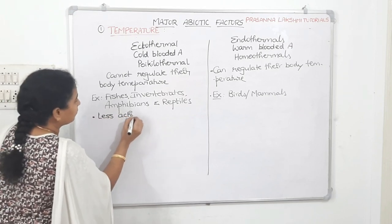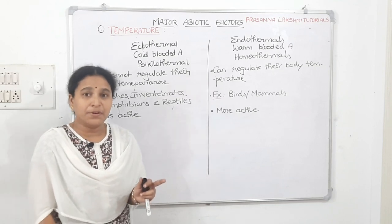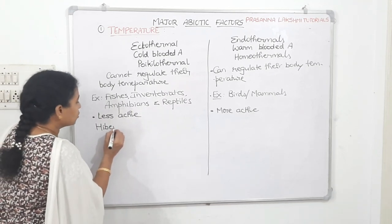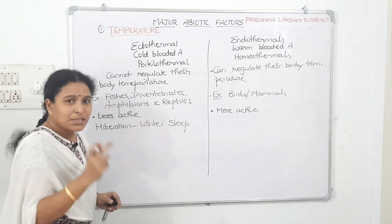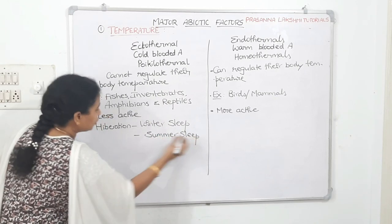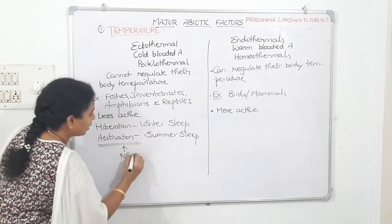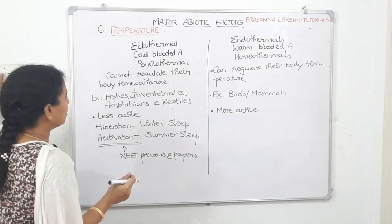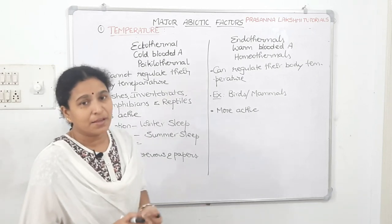Ectotherms are less active in nature compared to endotherms. Since they are unable to maintain their body temperature, during severe winter they go for hibernation, which is winter sleep. To avoid severe summer, they go for estivation, which is summer sleep. The question 'what is estivation?' has been asked two times in NEET examinations.